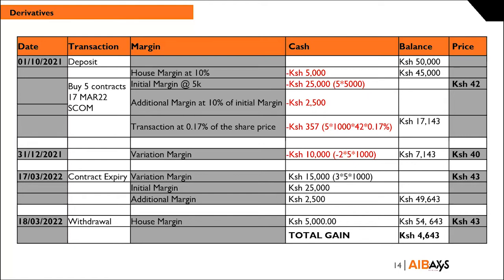Supposing the price drops from KES 42 to KES 40 at end of December 31st — what would this translate to for Janet? This would be a loss of KES 10,000, given by a loss of KES 2 times five contracts times 1,000 shares per contract. This would leave her with a balance of KES 7,143.